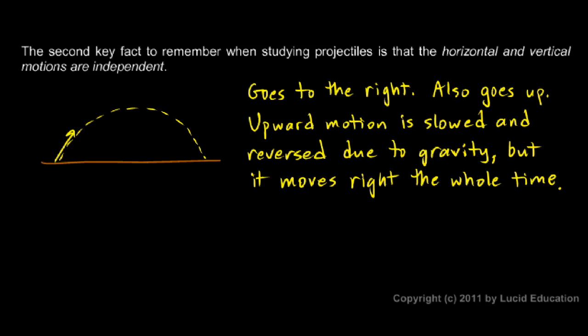We see that happening in the case of a simple projectile. You might not have thought about it before, but that's an important fact for understanding projectile motion. It moves up and down, and gravity affects the vertical motion, but it continues moving horizontally the whole time because gravity doesn't affect horizontal motion. The horizontal and vertical motions are independent and should be treated independently.